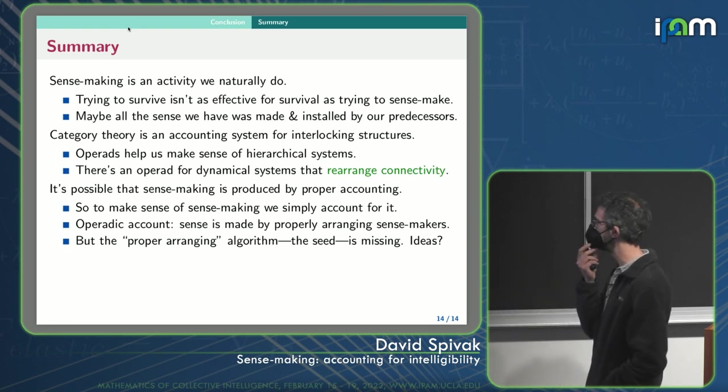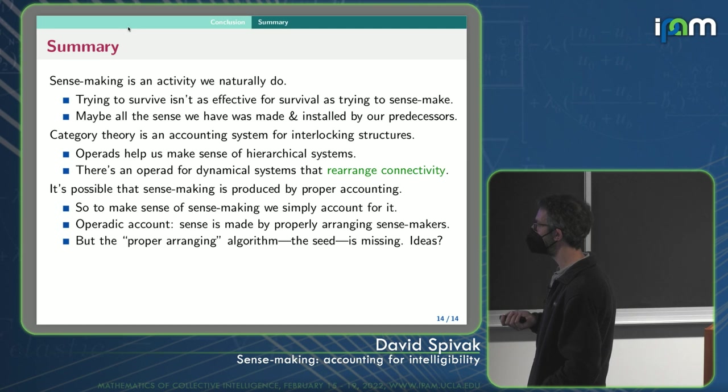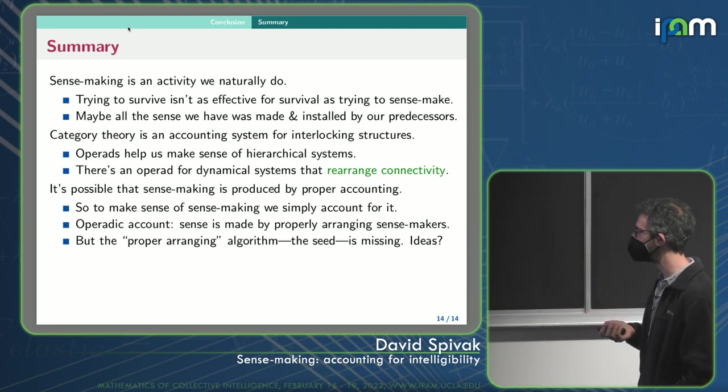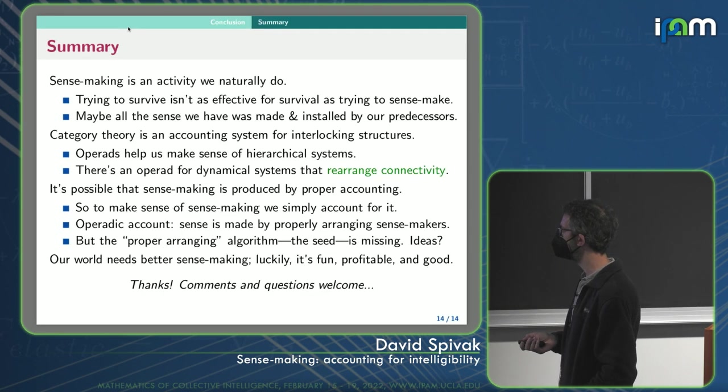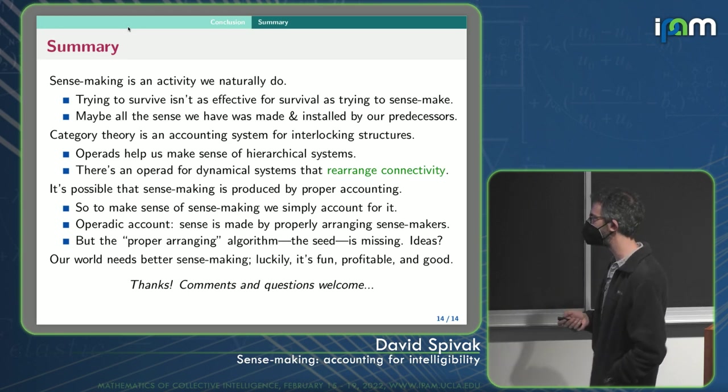It's possible even that our sense making itself is produced by proper accounting. So to make sense of sense making, we have to just account for it. This operatic account, that sense making would be made by properly arranging sense makers, is missing a key idea. So it's where I am with it, but it's missing a key seed, this kind of inductive step. So our world needs better sense making, but luckily it's fun, profitable, and good.